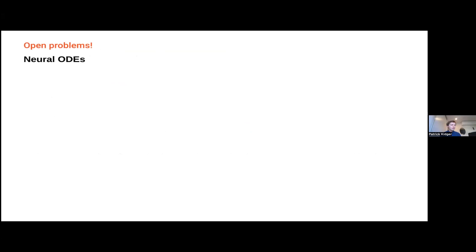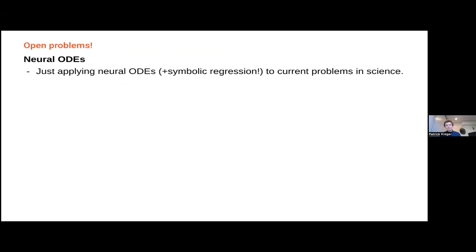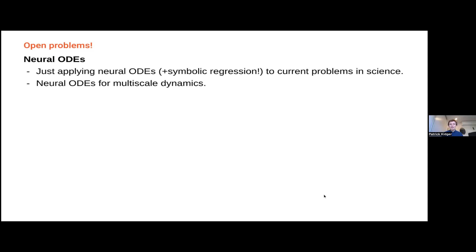Open problems. Neural ODEs applied to existing problems in science: how many papers are published every day doing some kind of differential equation applied to some part of science? I'm not a neural ODE maximalist — they won't be useful everywhere, but they will be a useful tool for a great many problems. A tool I'd like people to have in their toolbox and applied more broadly across science. On the theoretical end: one big open problem is neural ODEs for stiff dynamics and multi-scale dynamics — there hasn't been much work done on these. If you're interested in modeling chemical reaction kinetics with neural ODEs, there are interesting open problems there and probably a lot of papers to be written.